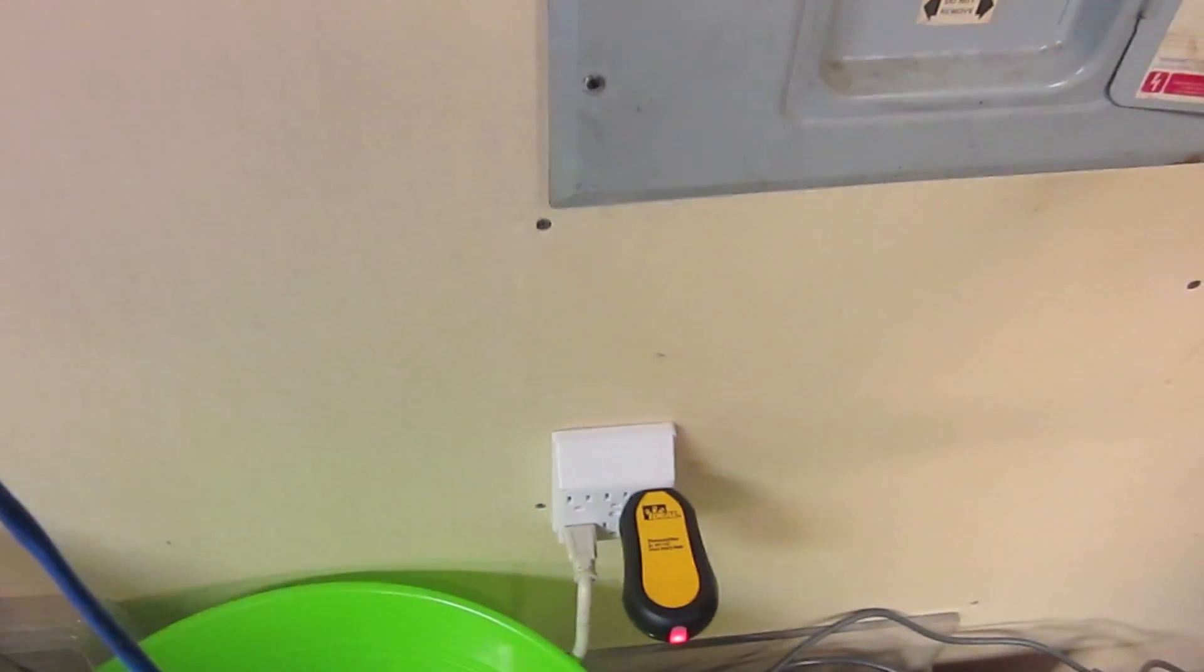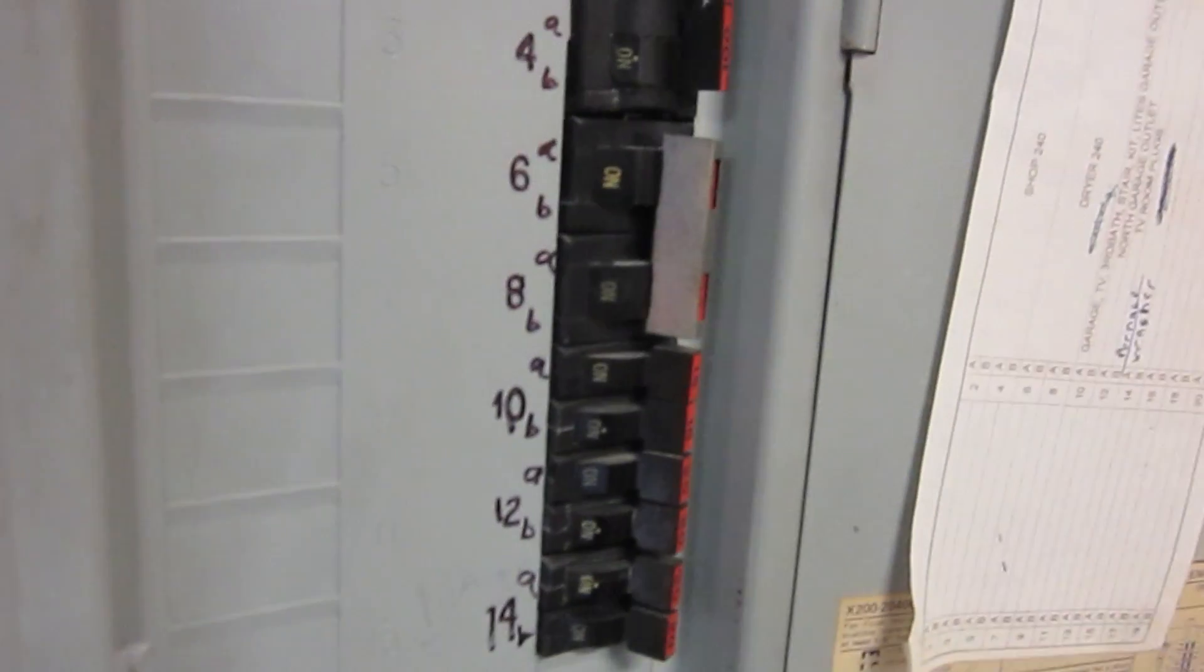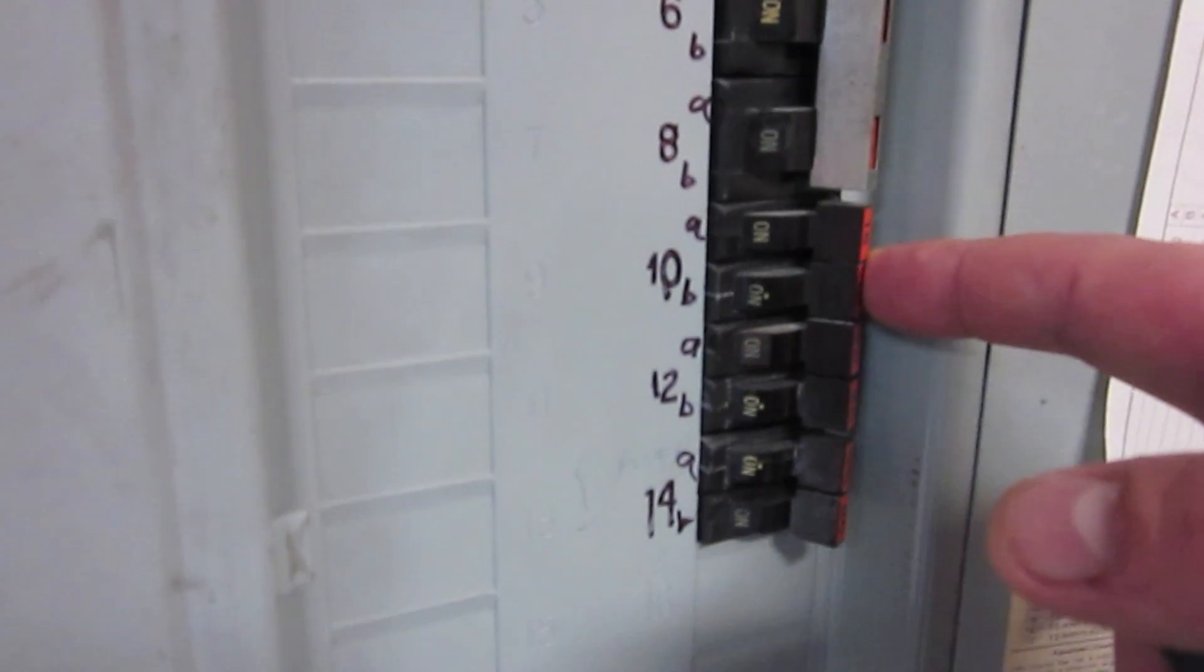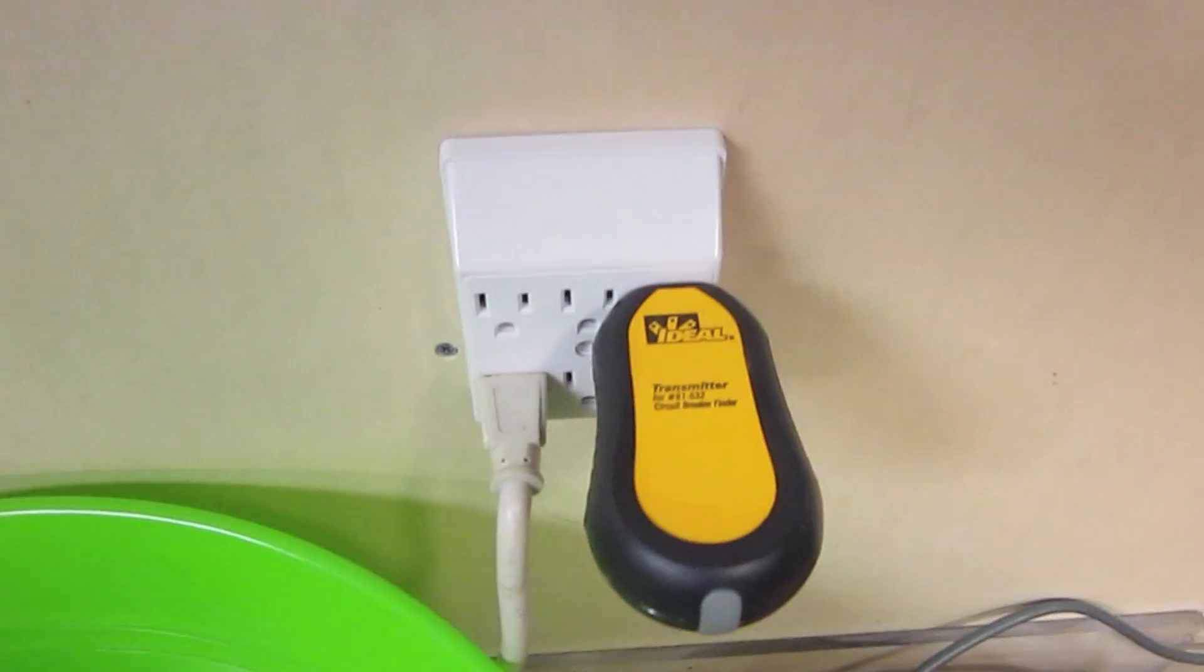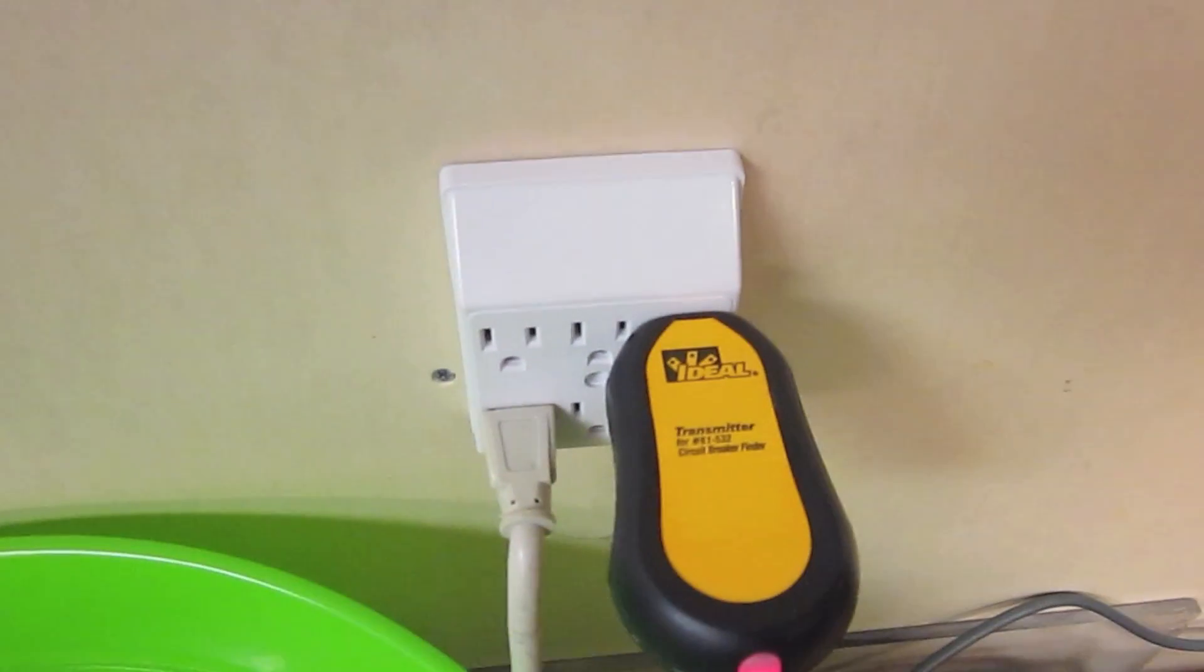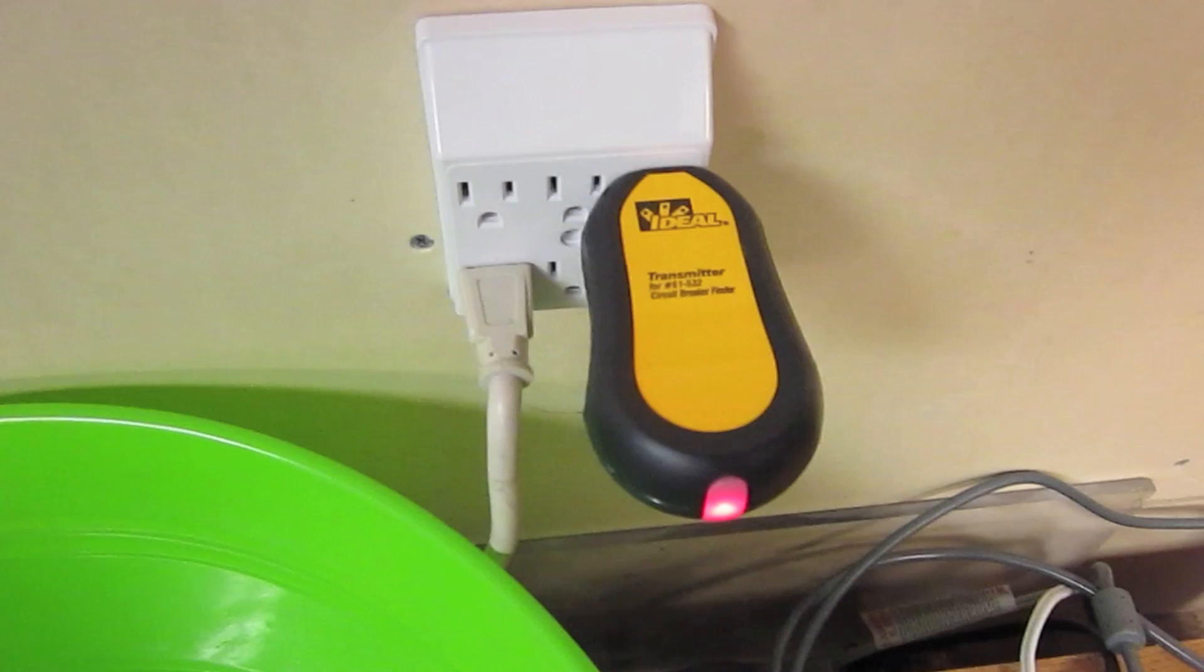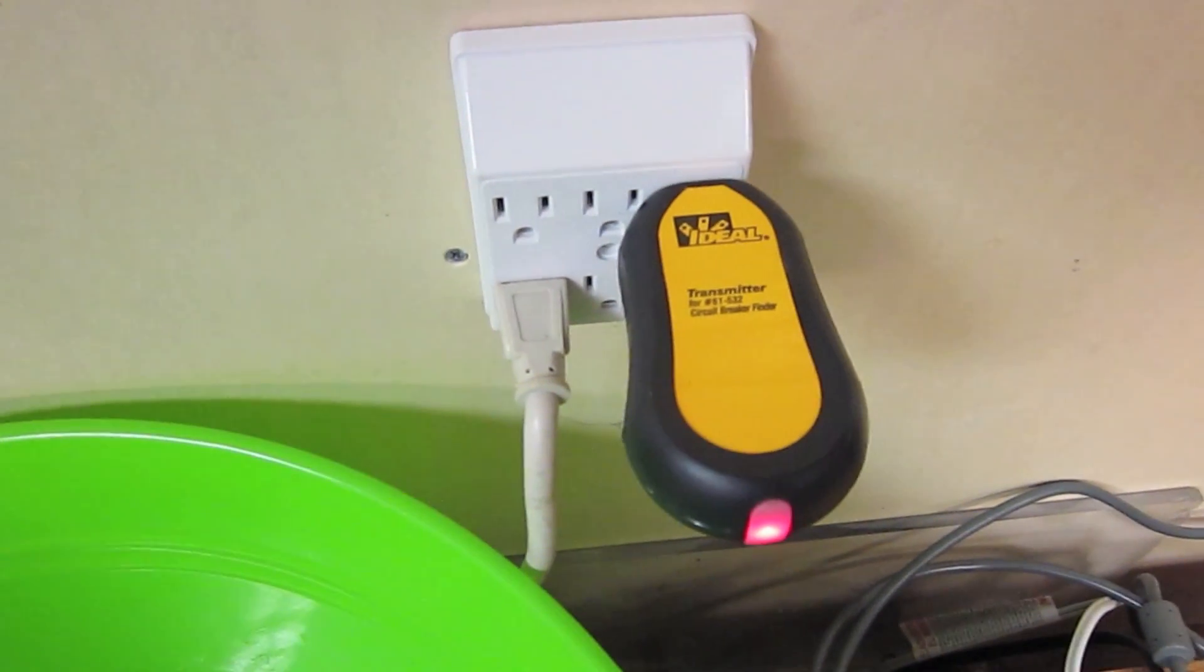And we can test it out. Find 10B here, flip it off, and look at that, lights out. Must be the right breaker. So, we're going to move into a teardown of these items, just a little examination of how they work. Up to the lab.